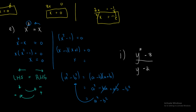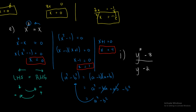So in this case I write (x minus 1)(x plus 1) is equal to 0. Now we can solve: x minus 1 equals 0, therefore x equals 1. And x plus 1 equals 0, therefore x equals negative 1. So we found our three solutions: x equals negative 1, x equals 1, and x equals 0.